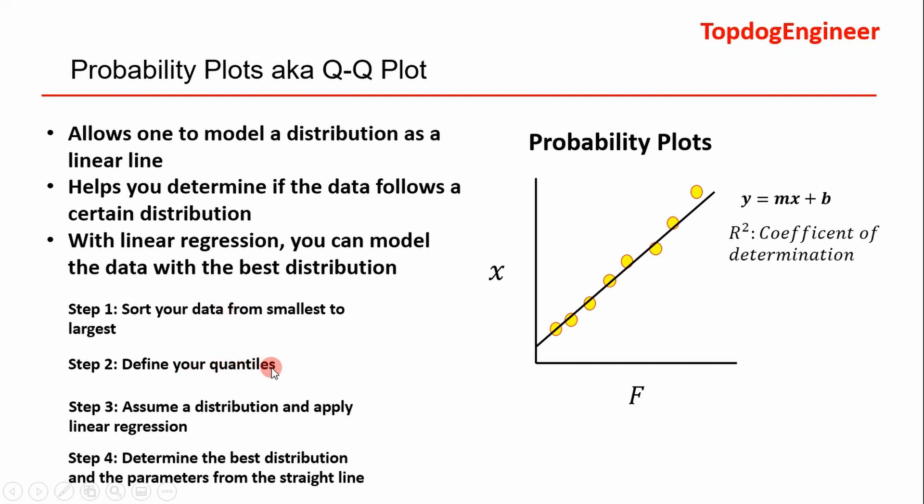The steps to make a probability plot you can find online. I basically outlined them right here, but the key step, step number one, sorts your output data from smallest to largest. That's key for what we're doing. Then you have to define your quantiles, and your quantiles are—there's several equations for quantiles.